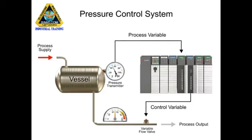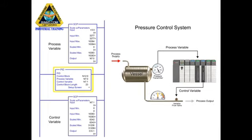In the following program example, the PID instruction is used to control pressure of a vessel. Using a pressure transmitter as the process variable and a flow valve as the control variable, the setpoint is maintained at 50 psi.